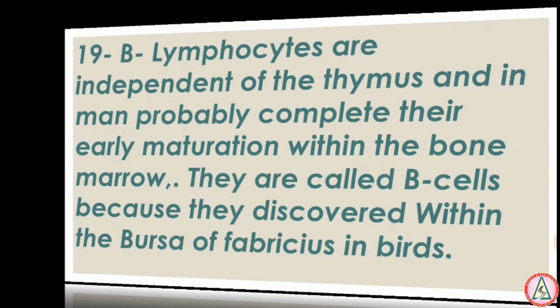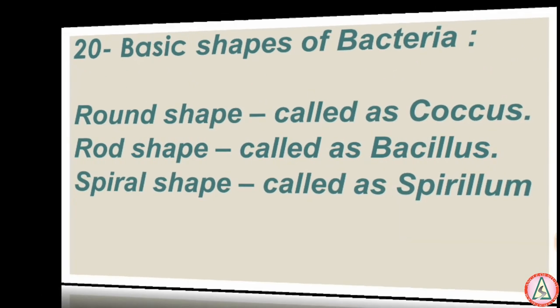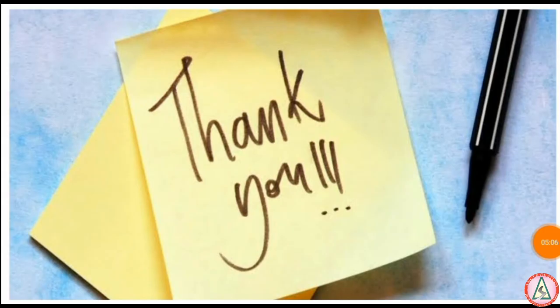Basic shapes of bacteria: round shape is called coccus, rod shape is called bacillus, and spiral shape is called spirillum. Eating fried rice in a restaurant and developing nausea, vomiting, and diarrhea is due to Bacillus cereus.